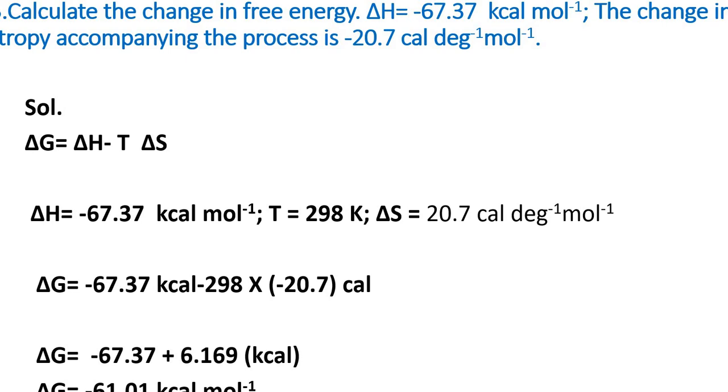We put all these values into ΔG = ΔH - TΔS. When we multiply these values we get the result in calories, so first we convert the calories into kilocalories. The value is 6.169 kcal, so ΔG = -67.37 + 6.169 = -61.01 kcal mol⁻¹.